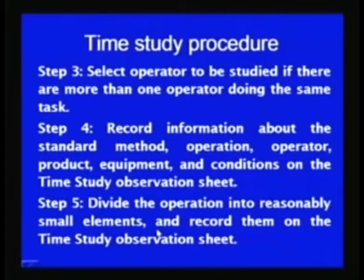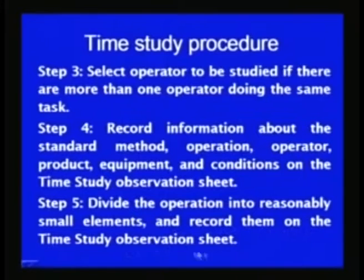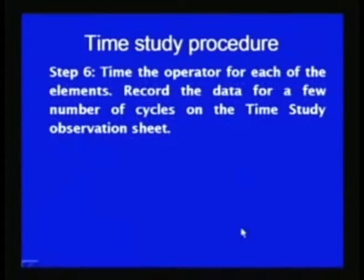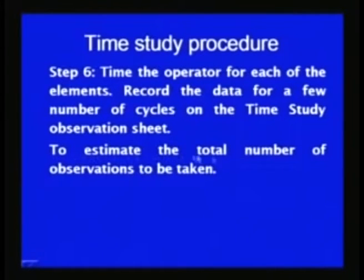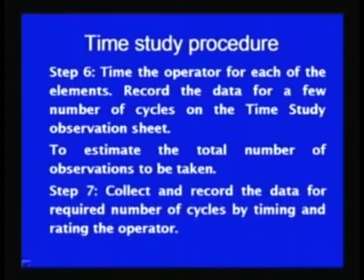The operation is then divided into reasonably small elements so that time values for each element can be noted down and measured accurately using suitable timing devices. After dividing the operation into small elements and noting them on the study sheet, the time values for each element are noted down for a few number of cycles. A proper procedure is then used to find out how many observations should be taken for each element to achieve some degree of confidence and desired accuracy in the data.